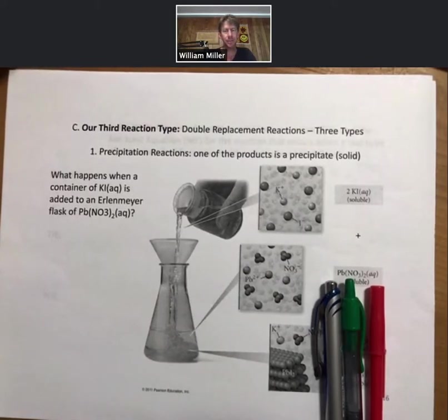Our third reaction type that you have to be able to write for me on quizzes and exams are called double replacement reactions. And even within those, there are three types or three subtypes within that. But they all follow the same pattern, so they're all called double replacement reactions. Some other instructors call them double displacement reactions.